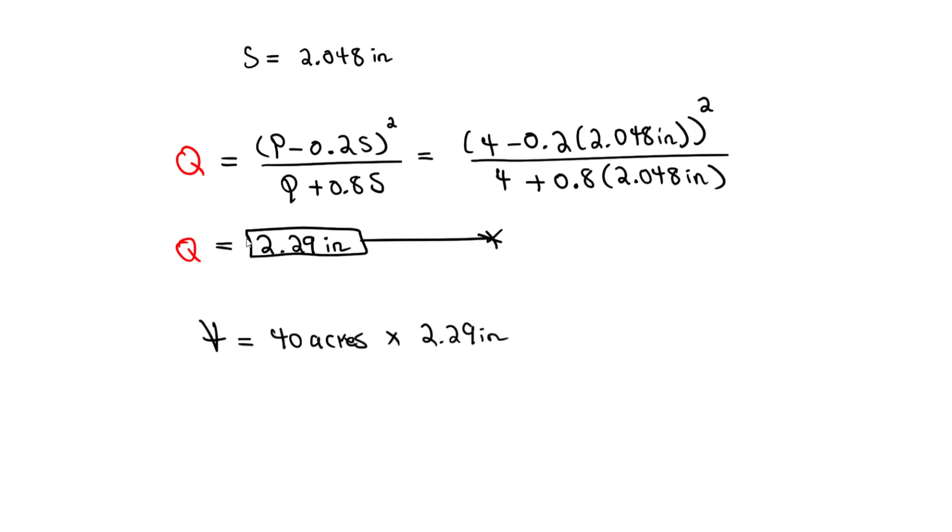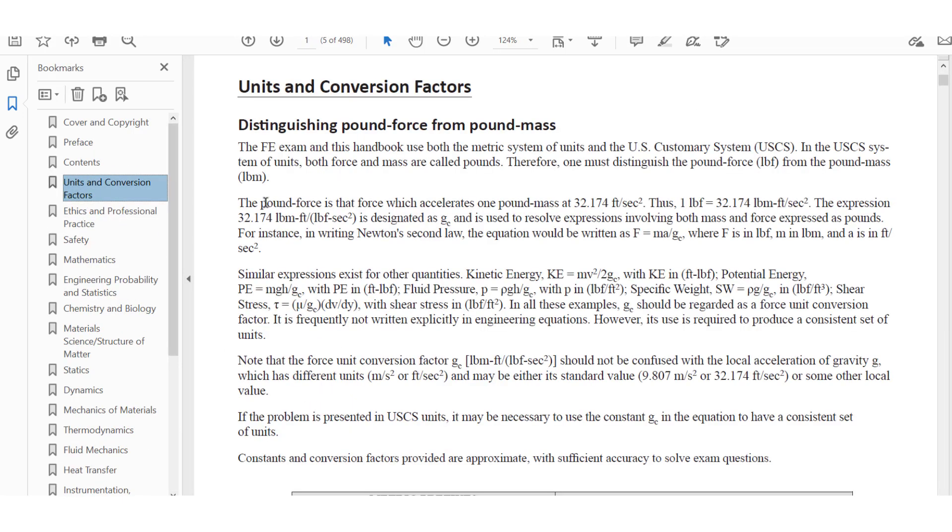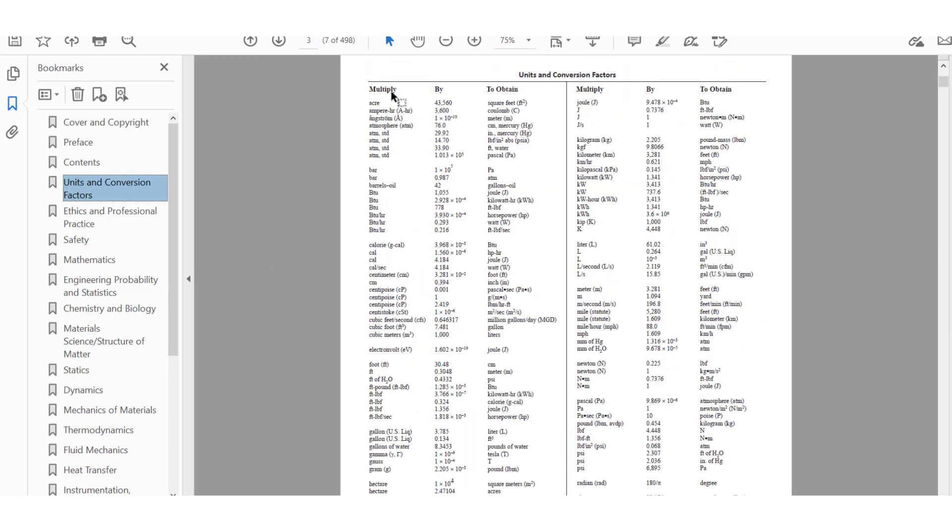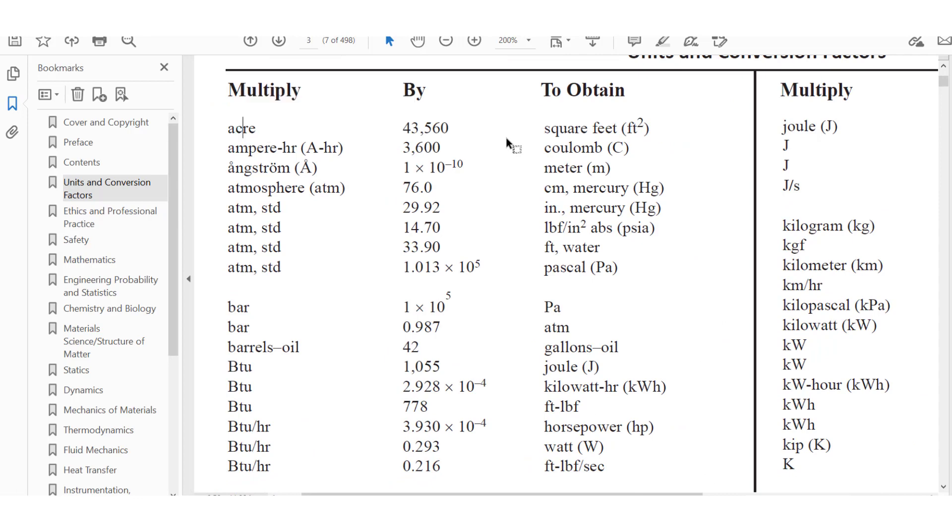But notice here how the units don't match. So we have to convert acres to, I will convert that to feet first, to feet squared, and we can do this. This is a very common conversion that I remember using a lot in water resources. It's going to be, you're going from acres to square feet. So you just multiply by 43,560.